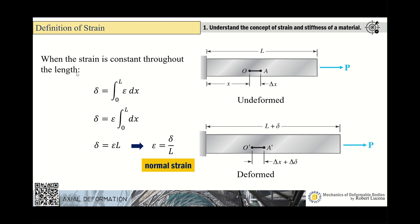When strain is constant throughout the length, we place the strain outside the integral sign and perform the usual integration, yielding strain equals deformation over length. This confirms that strain equals deformation over length for an axially loaded member that exhibits normal strain.